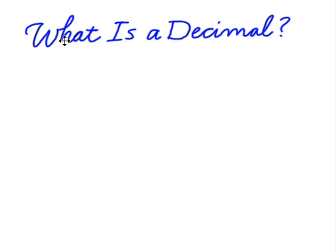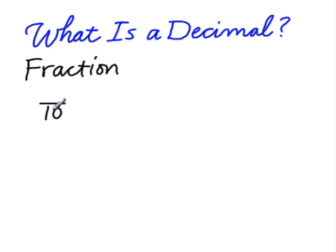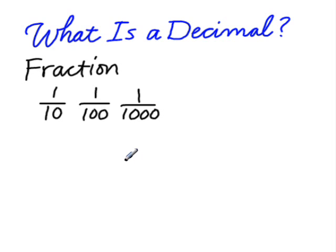What is a decimal? Very simply, a decimal is a form of a fraction — a fraction where the denominator is a multiple of 10, like 1/10, 1/100, or 1/1,000. The way it's written uses the place value system with a decimal point. For example, 1/10 would be the same thing as 0.1.